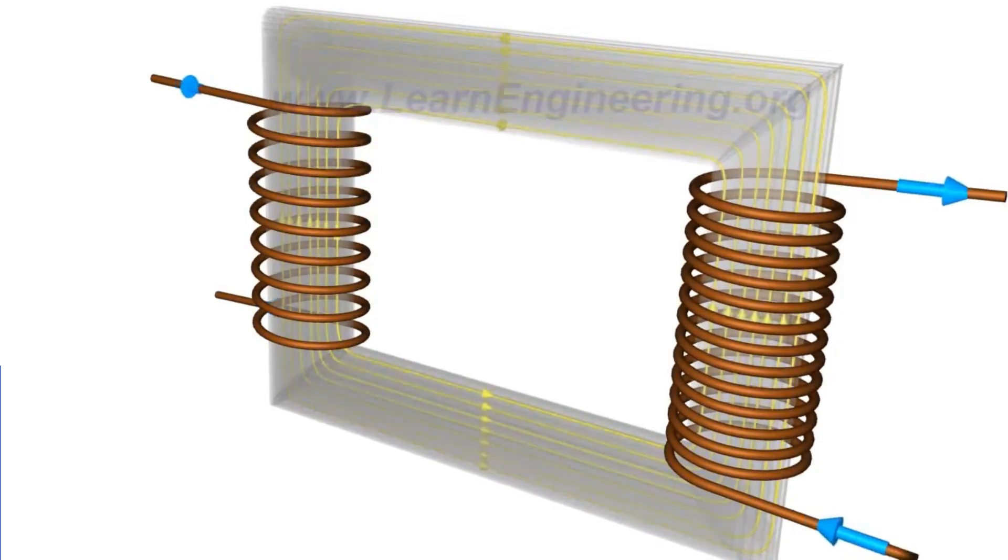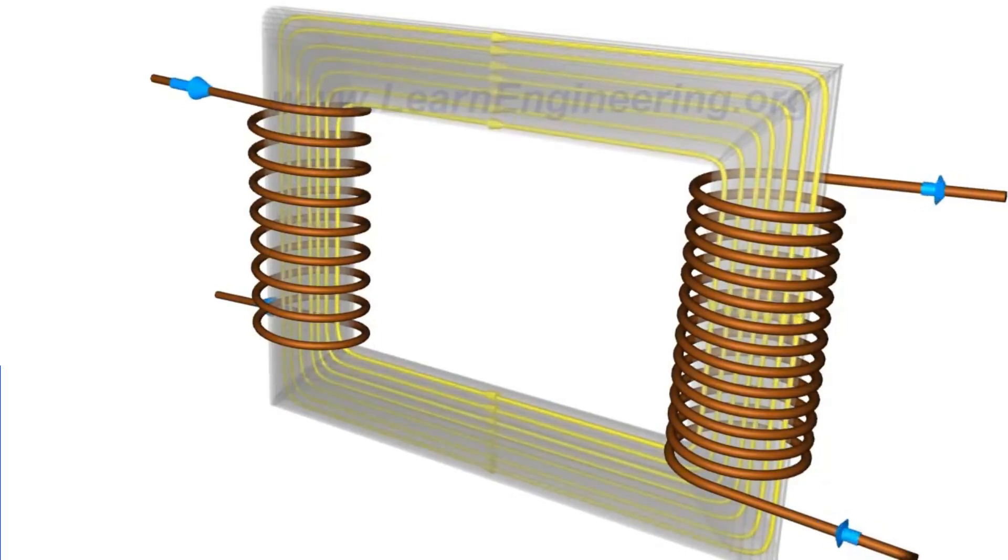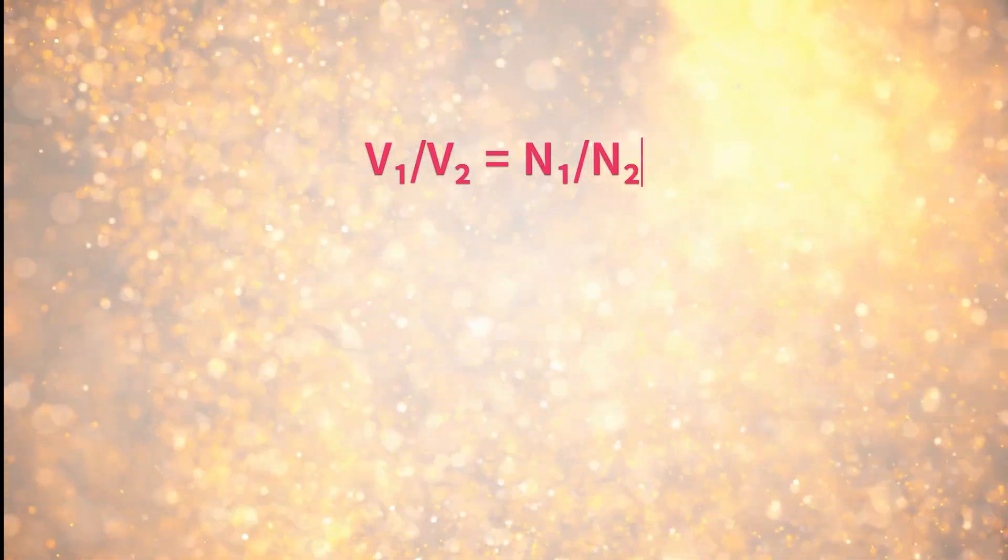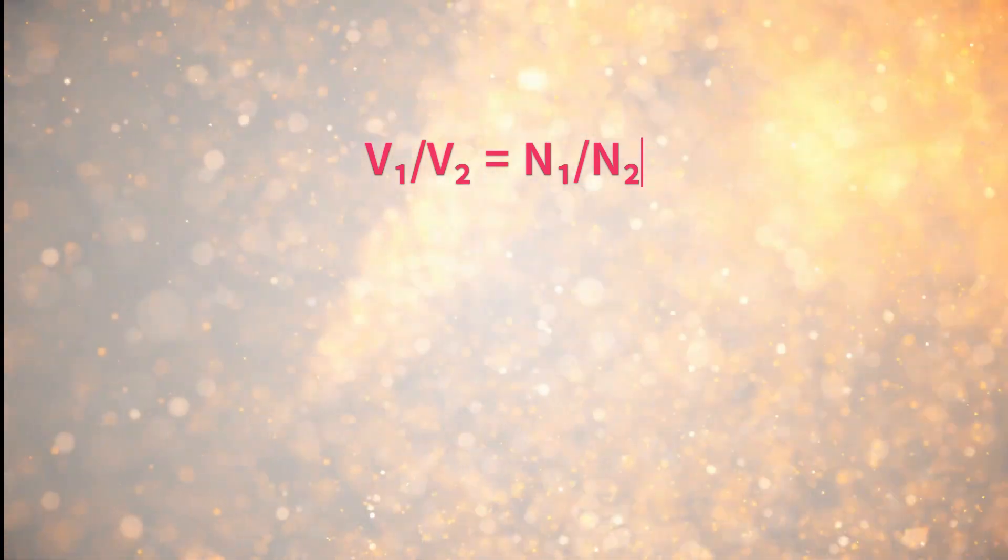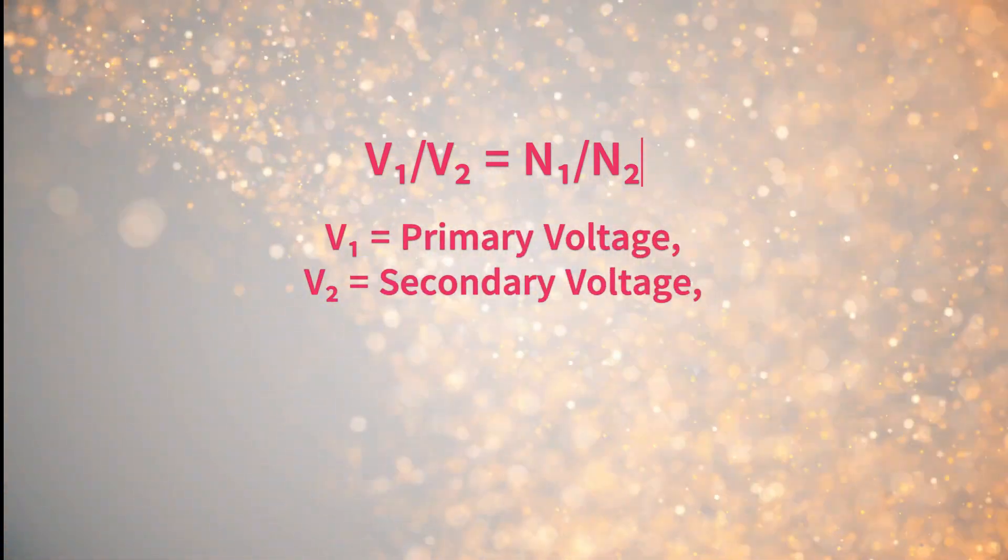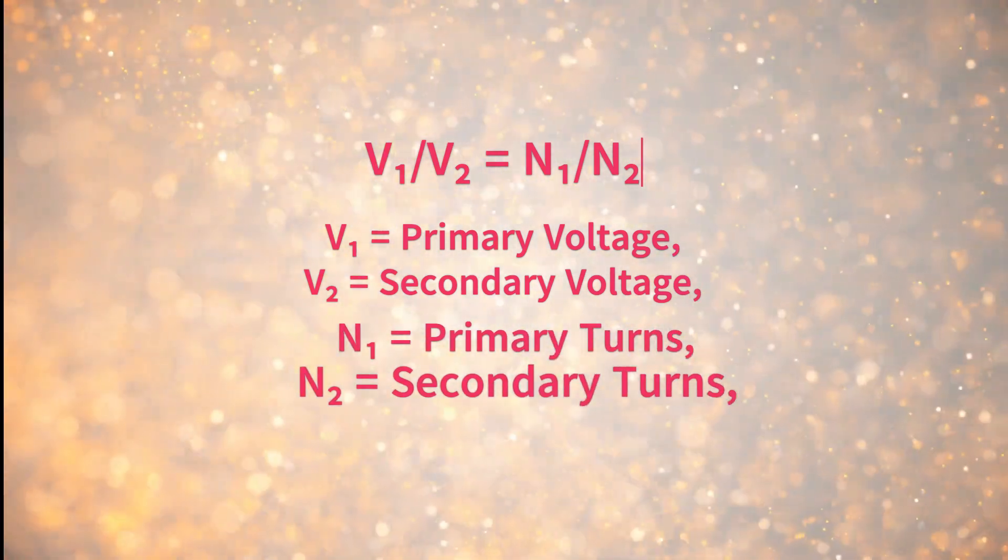This results in an increased output voltage compared to the input voltage. As the primary coil's AC generates a magnetic field, the secondary coil's extra turns lead to a higher induced voltage, causing a step-up in voltage. The mathematical relationship is expressed as V1/V2 = N1/N2, where V1 and V2 are the primary and secondary voltages, and N1 and N2 are the corresponding turns.